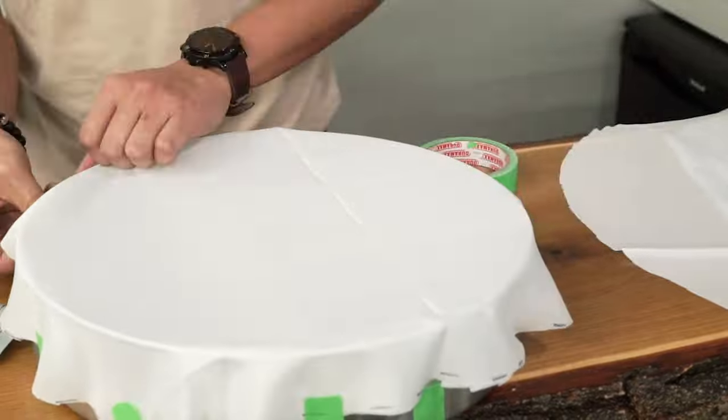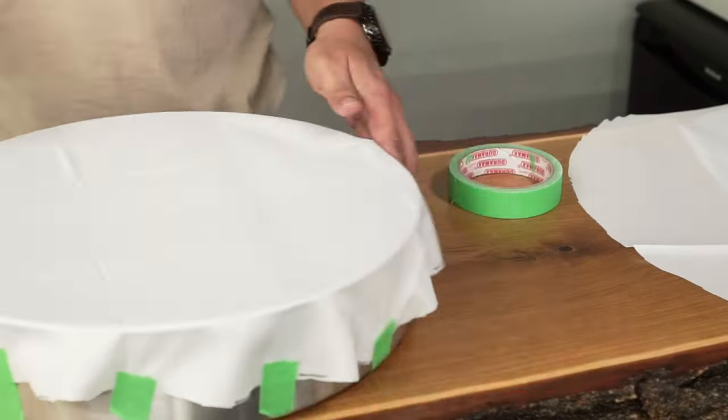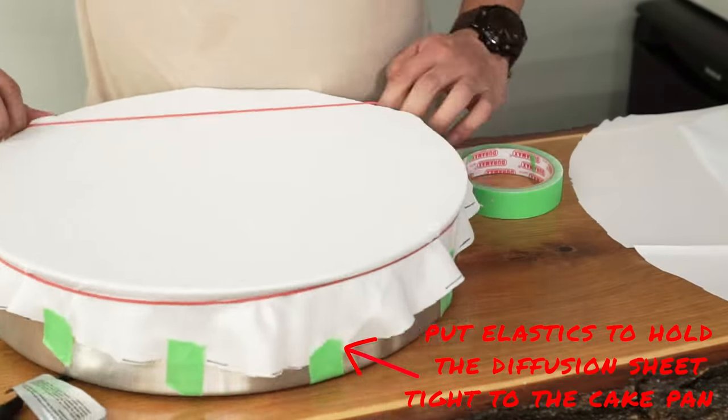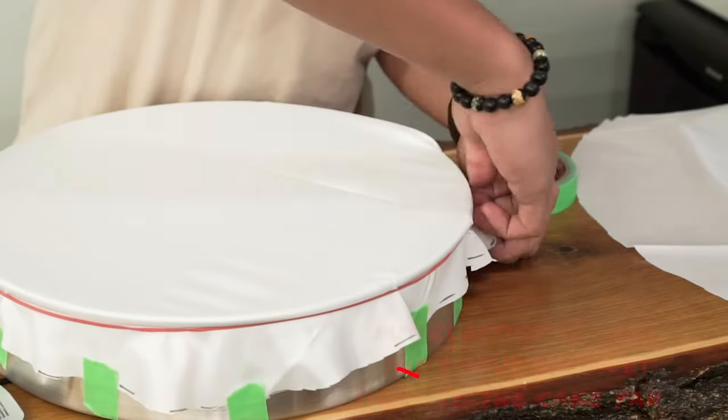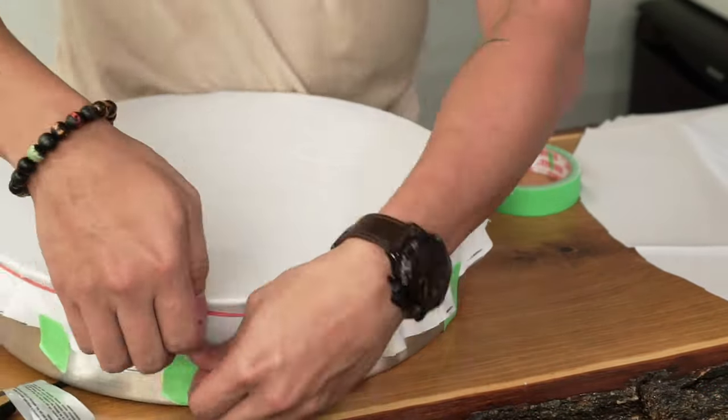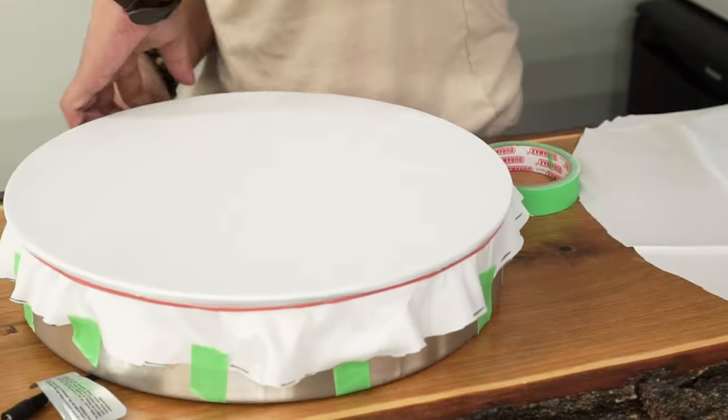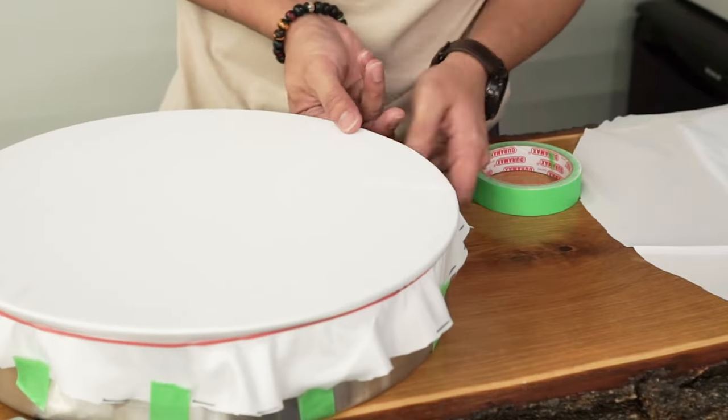Once that's complete, grab the elastics and place it around the cake pan. This will ensure the diffusion sheets are held tight. Pull the diffusion sheet down and around the cake pan as required.